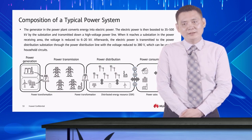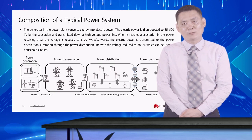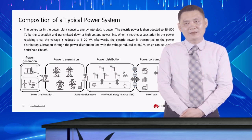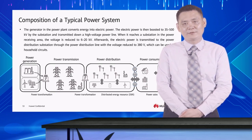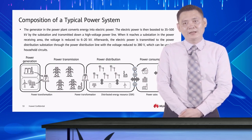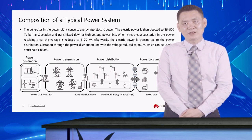The generator in the power plant converts energy — such as chemical energy or potential energy of water in hydropower stations — into electric power. The electric power is then boosted to 35 to 500 kV, 800 kV, or even over 800 kV by the substation and transmitted down a high voltage power line.